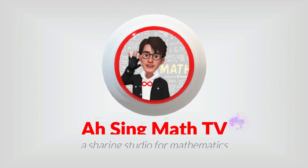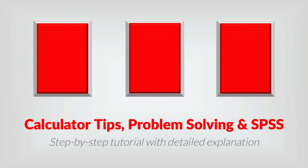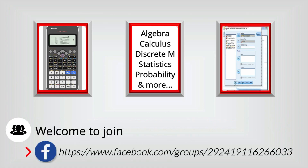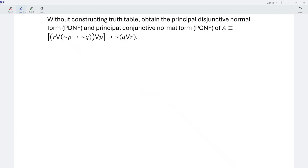Hi, this is AXING. You are now watching AXING MAD TV. Today, we'd like to share how to obtain the principal disjunctive normal form and the principal conjunctive normal form without constructing the truth table.